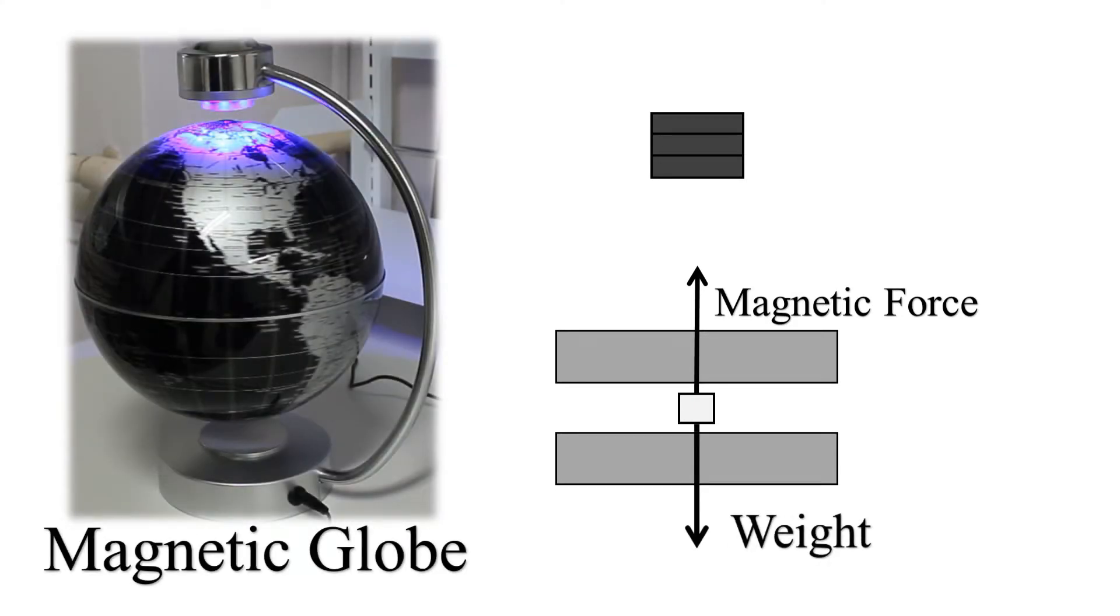On the video about the magnetic globe experiment we explained that it is not possible to find stable balance between the weight and the magnetic forces of true permanent magnets.